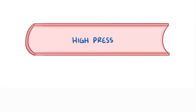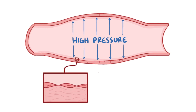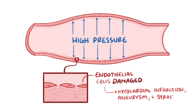High blood pressure is a serious problem for the blood vessels because it causes wear and tear on the endothelial cells that line the inside of the blood vessels. Just like a garden hose that's always under higher pressure, in the long term blood vessels can develop tiny cracks and tears that can lead to serious problems like myocardial infarctions, aneurysms, and strokes.